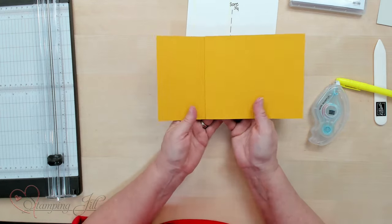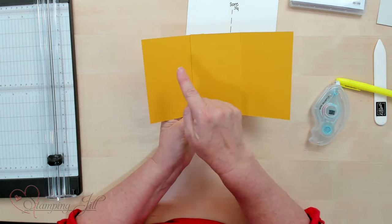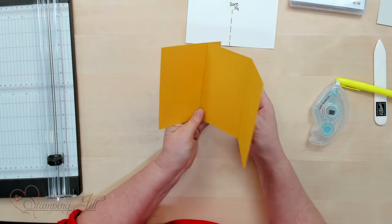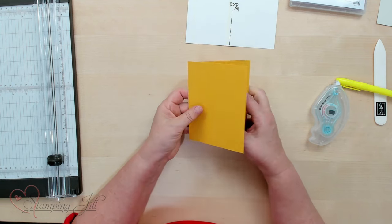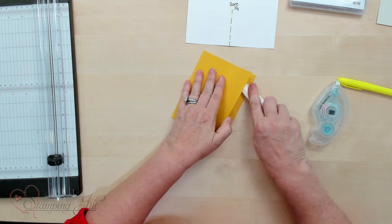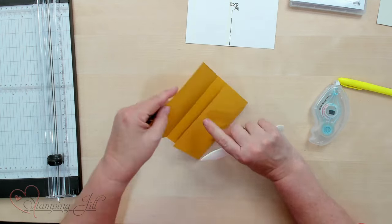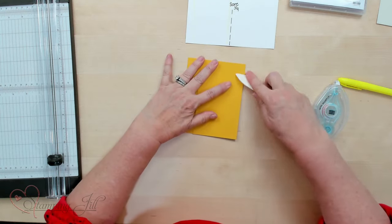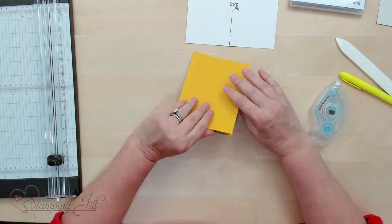So we've got our tri-fold. One, two, three. This will fold in and this will fold on top. Then after it's all folded, you can go ahead and burnish it again to make sure that it's really nicely scored on all those pieces.